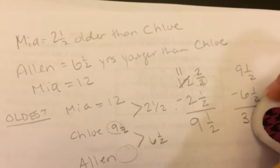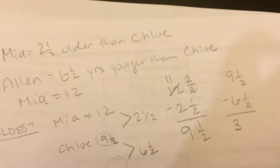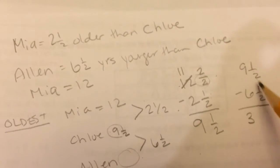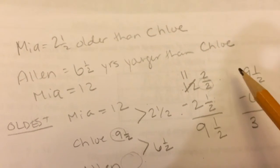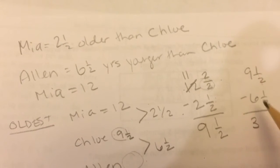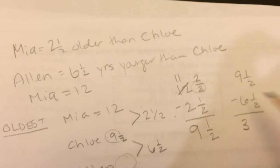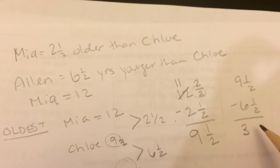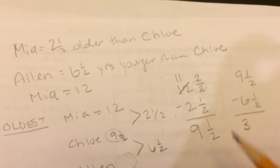And that zero is kind of confusing to me, so I'm just going to leave it blank. I'm going to erase it. The one half minus one half is nothing, so I left it blank. 9 minus 6 is 3. And I can double check: 3 plus 6 is 9, nothing plus one half is one half.